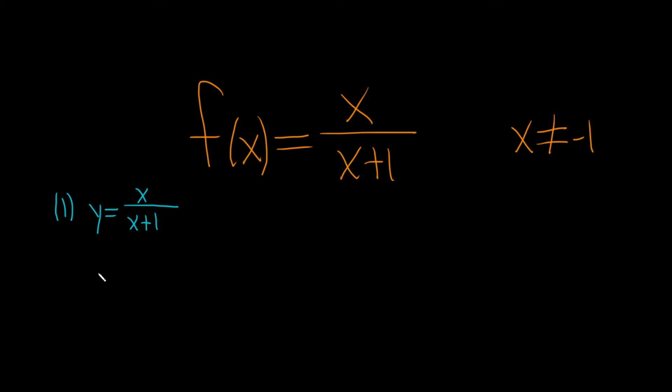The second step when finding the inverse of a function is to switch your x and y. So here I'm going to call this x, and then here we'll call these y's. So this is y over y plus 1.